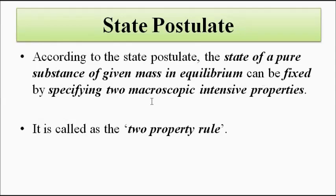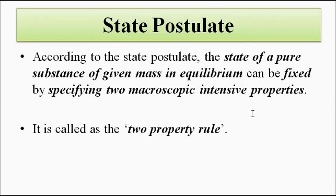The state of a pure substance in thermodynamic equilibrium can be fixed by specifying any two macroscopic intensive properties. This means any two properties can fully define the system, and all other remaining properties can be derived from those two values. This is also called the two-property rule. The choice of which two properties to use depends on the system under study.